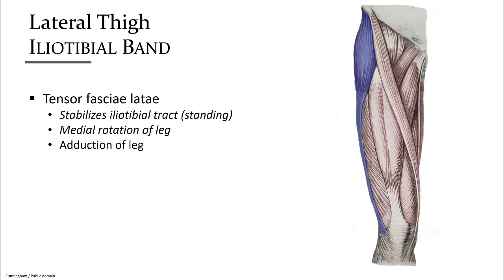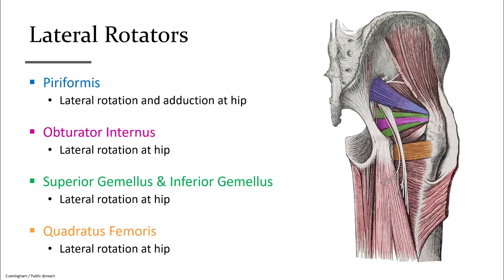Within the IT band, a long wide aponeurosis, is a small muscle called tensor fascia latae that holds the aponeurosis taut and helps lock the knee when the quadriceps femoris are relaxed. The group of small muscles under the gluteus are known as lateral rotators due to their common action. In order from superior to inferior, they are piriformis, superior gemellus, obturator internus, inferior gemellus, and quadratus femoris. The gemellus muscles are side by side with the obturator internus just on top of them.